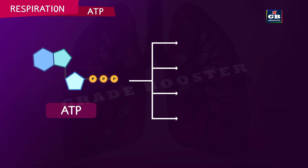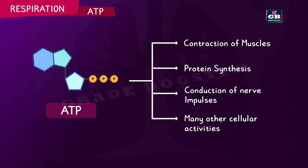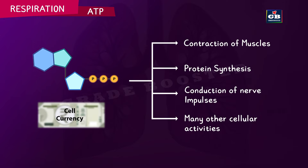ATP can be used in the cells for the contraction of muscles, protein synthesis, conduction of nerve impulses, and for many other activities. For this reason, ATPs are called cell currency.